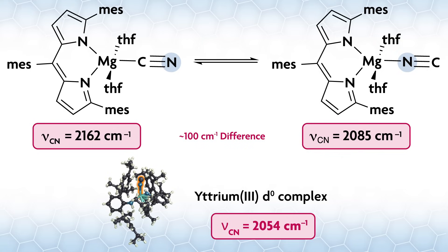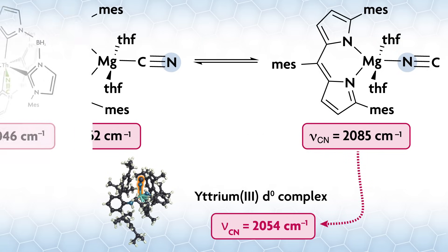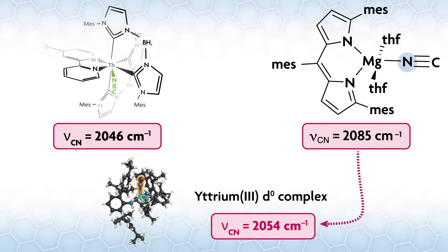Our compound's stretching frequency of 2054 cm⁻¹ is pretty close to their isocyanide value as well. The Arnold group's thorium compound has an isocyanide stretch nearly the same as our yttrium complex at 2046 cm⁻¹. In other words, if you have low backbonding in the system, it looks like the isocyanide stretch will be around 2050 and the cyanide will be around 2150 reciprocal centimeters.